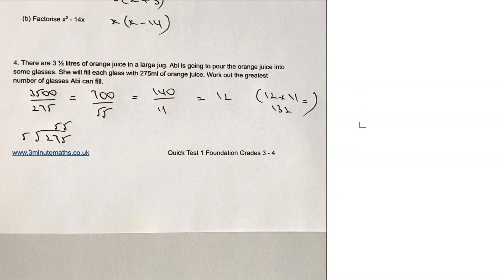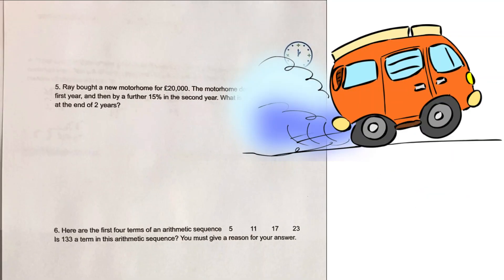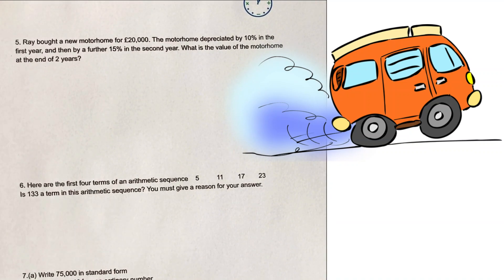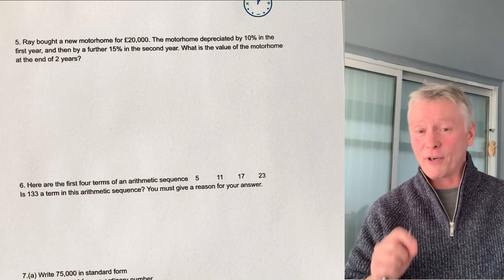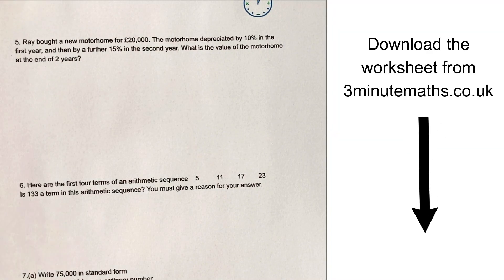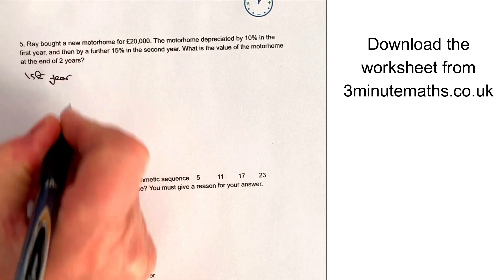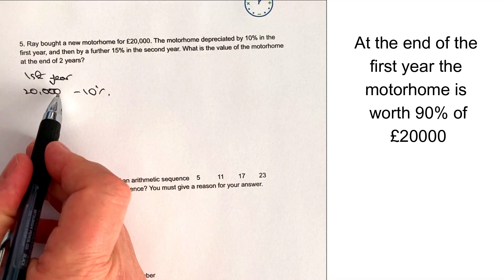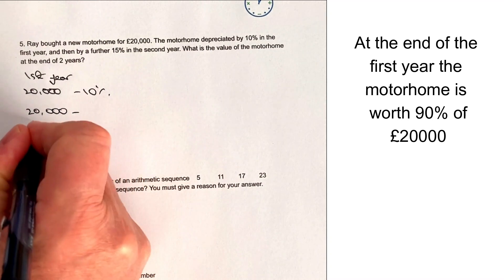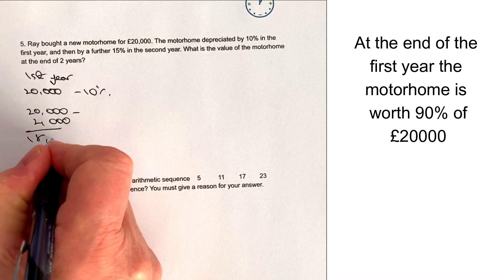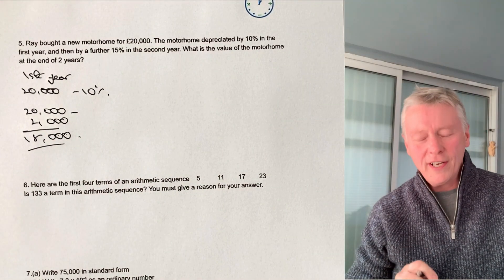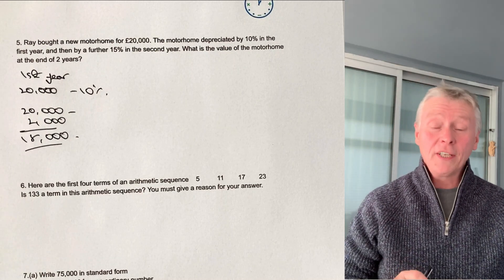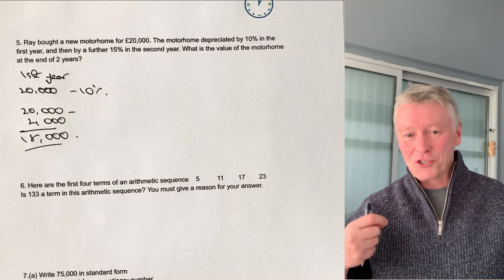Let's move on then to question number five. In question number five, we've got Ray buying a motorhome. He buys it for £20,000. And then importantly, depreciates by 10% for the first year. Now, again, this is very, very common type of questions you're going to get in foundation paper. So please do practice these. So what we've got to do is in the first year, look at the depreciation. So basically, we've got £20,000. And we're going to subtract 10%. Well, 10%, £20,000. You move the decimal point one place along, that's £2,000. So it's going to be £20,000 minus £2,000. And that's going to be £18,000. So at the end of the first year, the motorhome is worth £18,000.